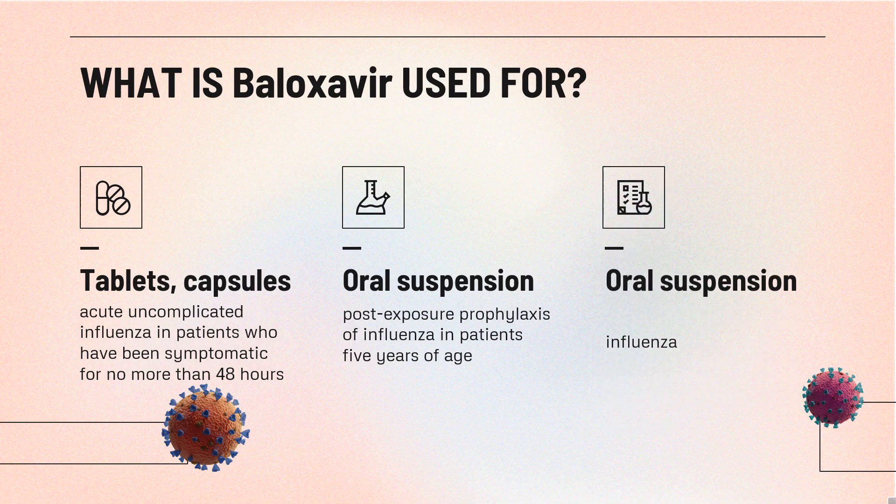Biloxavir marboxyl is an influenza virus polymerase acidic (PA) endonuclease inhibitor indicated for the treatment of acute uncomplicated influenza in patients who have been symptomatic for no more than 48 hours, and who are otherwise healthy adults and pediatric patients 5 years of age, or patients 12 years of age and older who are at high risk of developing influenza-related complications. The drug is also indicated for post-exposure prophylaxis of influenza in patients 5 years of age and older following contact with an individual who has influenza.